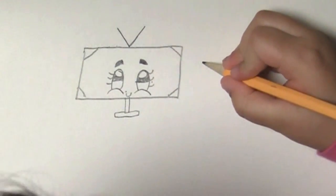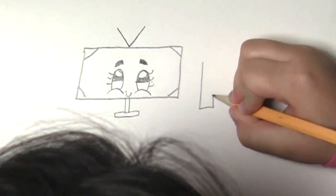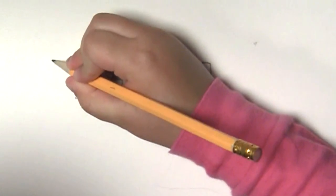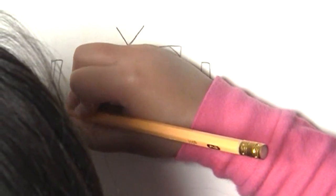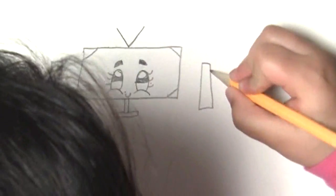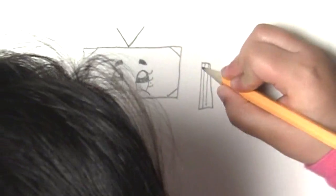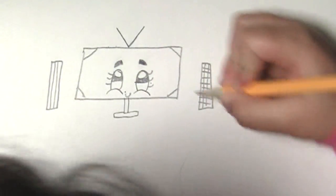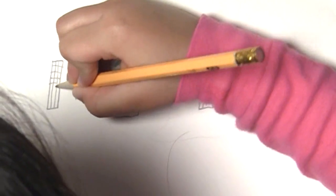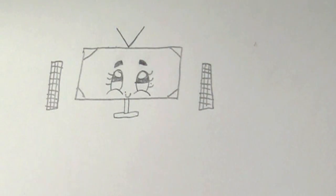And then what you're going to do is you're going to need the speakers on the side wall. So we're just going to go like that. Make the speakers. Make little speakers so there's sound coming out of them.